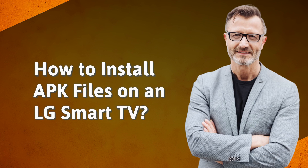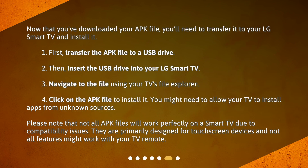How to install APK files on an LG Smart TV? Now that you've downloaded your APK file, you'll need to transfer it to your LG Smart TV and install it. One: transfer the APK file to a USB drive. Two: insert the USB drive into your LG Smart TV. Three: navigate to the file using your TV's file explorer. Four: click on the APK file to install it. You might need to allow your TV to install apps from unknown sources. Please note that not all APK files will work perfectly on a smart TV due to compatibility issues, as they are primarily designed for touchscreen devices and not all features might work with your TV remote.